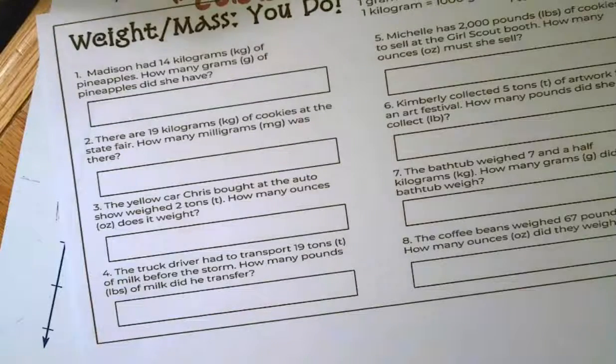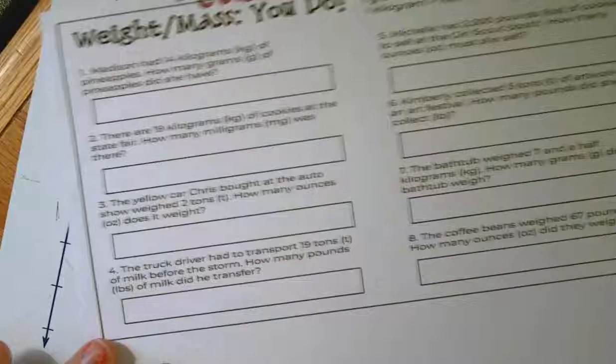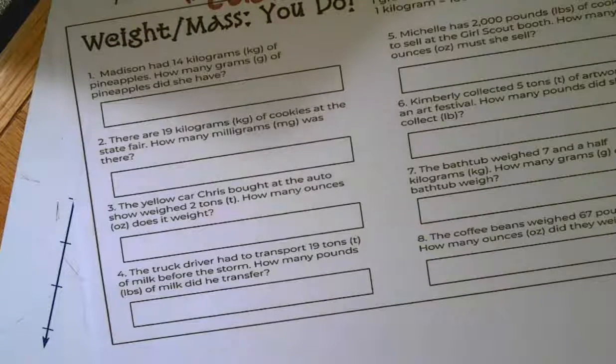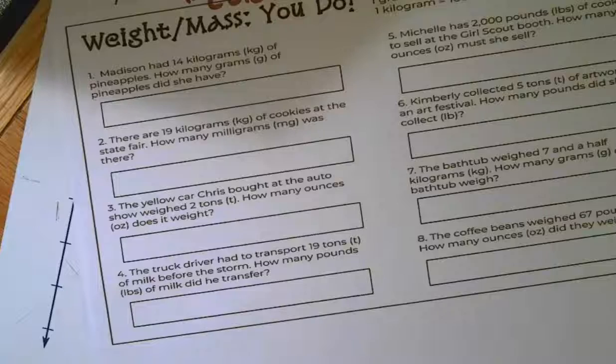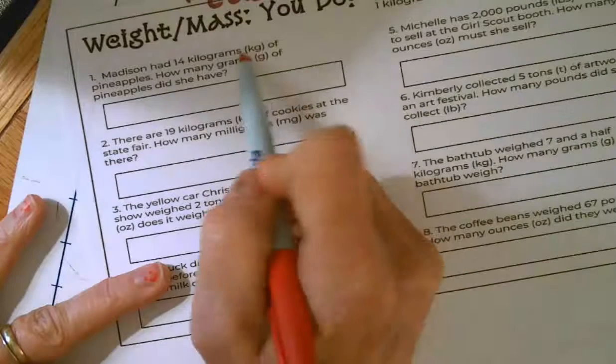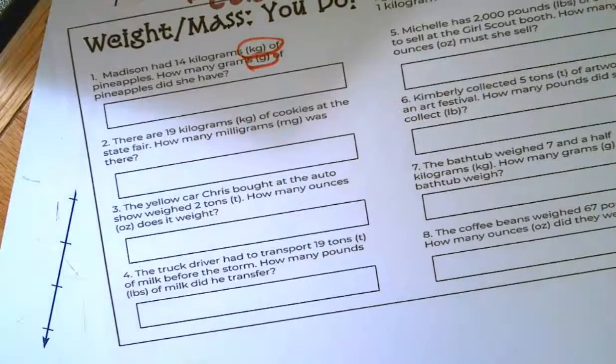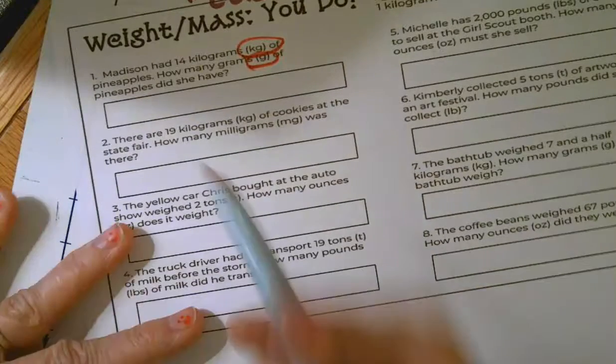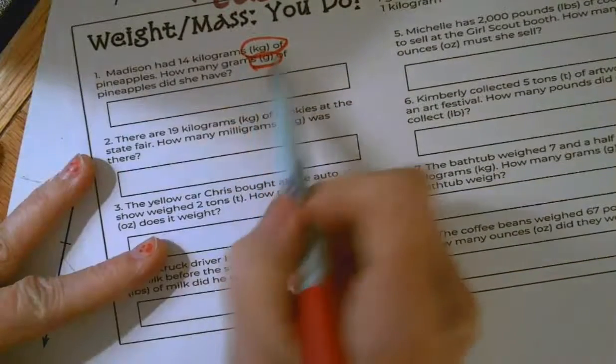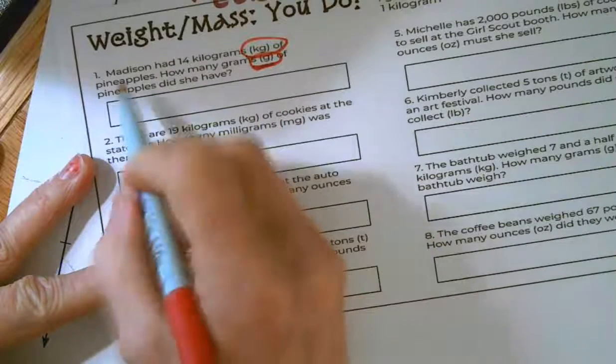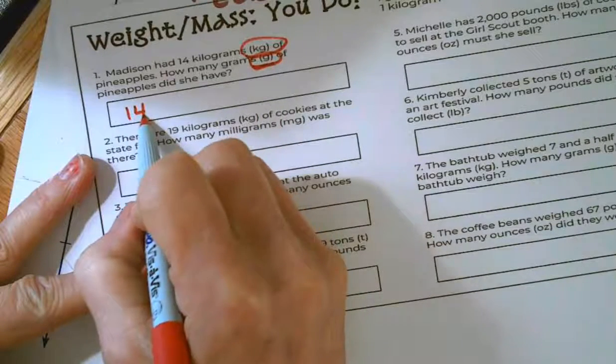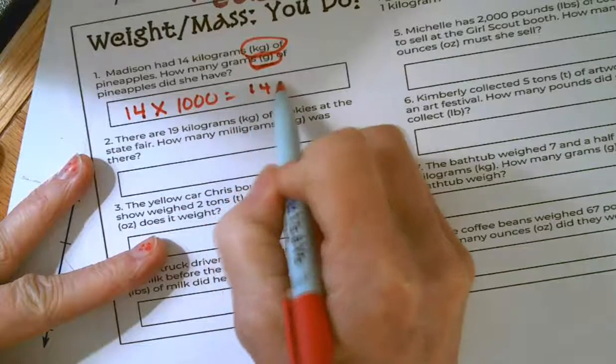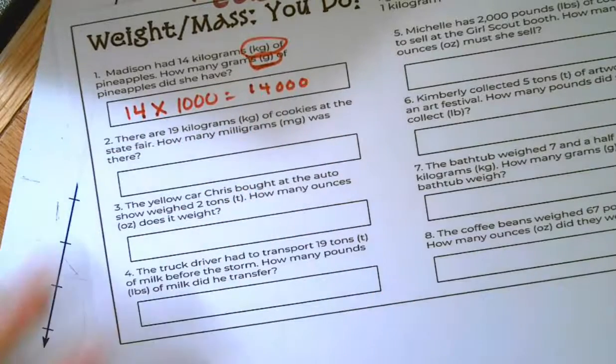Okay. On to the worksheet questions. All right. We started out with Madison having 14 kilograms of pineapples. And how many grams would that be? So I'm going from kilograms to grams. Now I can look at my chart and see that there are 1,000 grams in a kilogram. And so I'm going to say 14 kilograms times 1,000 equals 14,000. 14 with three zeros on the end.